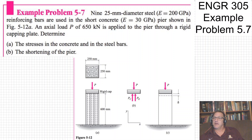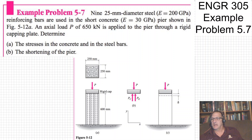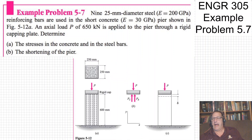Example problem 57: there are nine 25-millimeter (one-inch diameter) steel reinforcing bars used in a short concrete pier with given material properties, shown in figure 5-12. A load P — which is 650 kilonewtons — is applied to the pier through a rigid capping plate. The plate must be rigid so that we can relate deflections. Because the cap is rigid, the steel and concrete both deflect together.